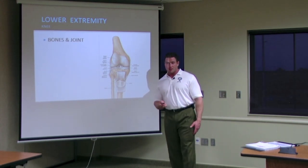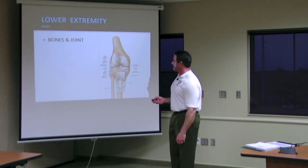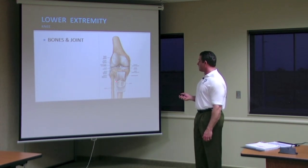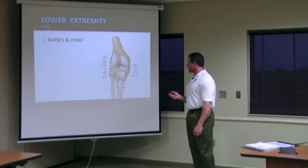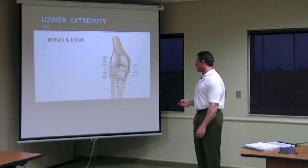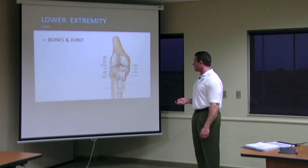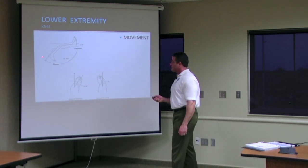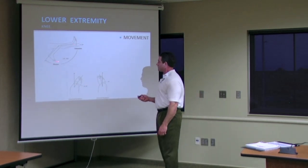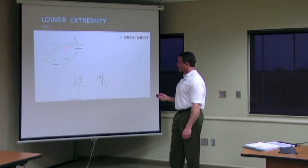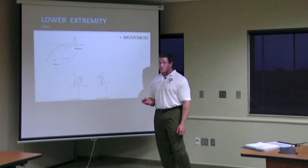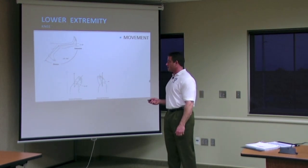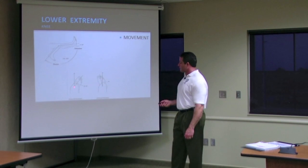We enter into the lower extremity region to talk about specifically the knee joint. We have a femur, tibia, and fibula and how they coincide with the actual knee joint, which is a hinge joint. The main functions are going to be extension — increasing the angle of the joint — and flexion, which is decreasing the angle of the joint.